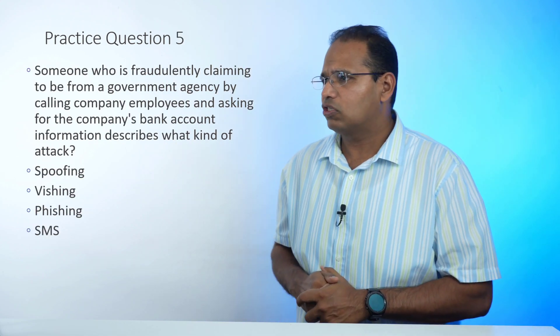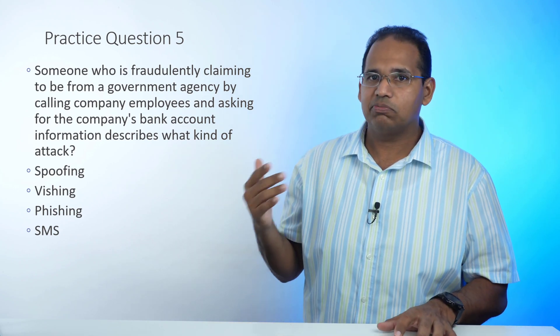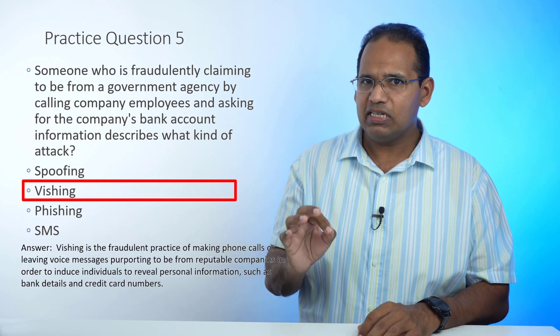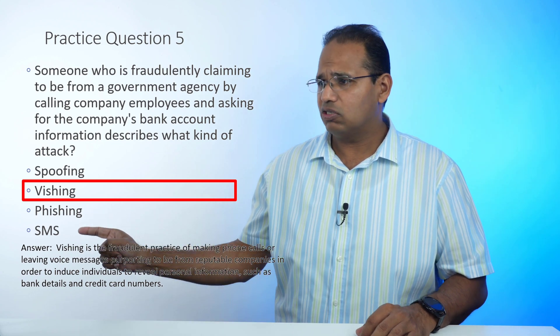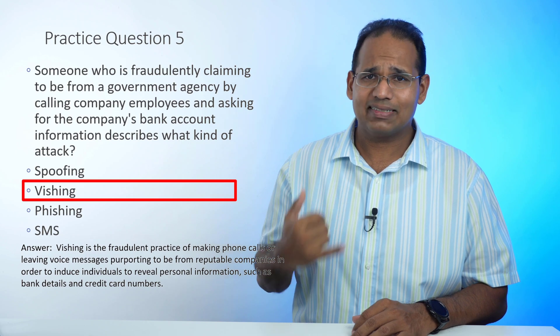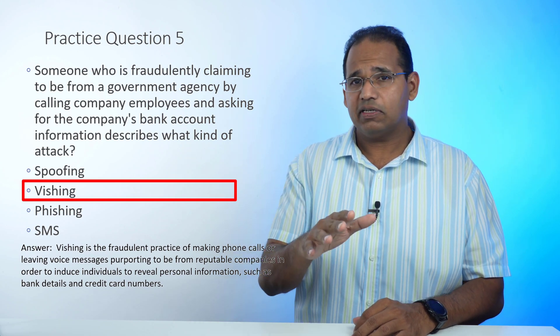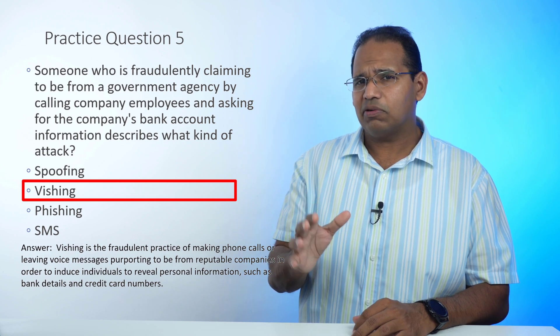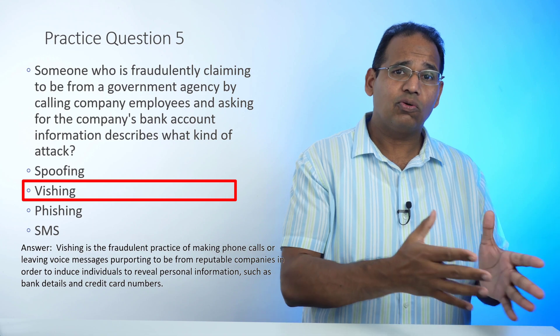Practice question number five: Someone fraudulently claiming to be from a government agency is calling company employees and asking for the company's bank account information. What kind of attack is this? The best answer is vishing — voice phishing. Phishing is a fraudulent email like a fake PayPal password reset. SMS is just text messages. Spoofing involves faking an IP or MAC address. But when someone uses their voice over the phone to scam people and obtain financial information, that is vishing. It is mitigated through end-user training.